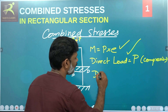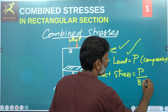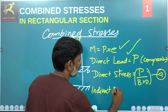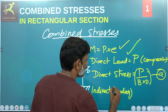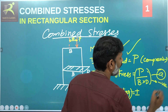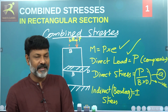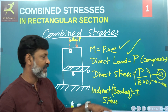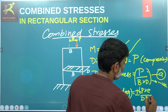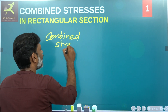Direct stress is load divided by B into D. For indirect bending stress: it is plus or minus 6·P·e divided by d·b². Why plus or minus? Because in bending stress, one side is tensile and one side is compressive. Therefore, plus or minus — plus indicates tensile and minus indicates compressive. So sigma_b equals plus or minus 6·P·e divided by d·b².